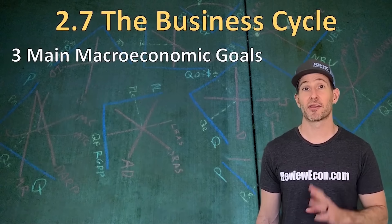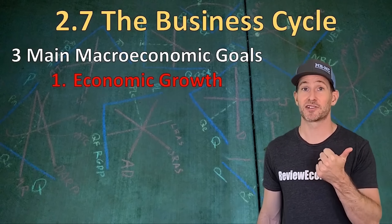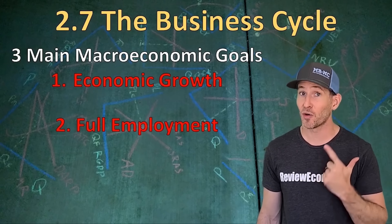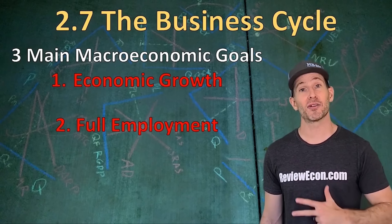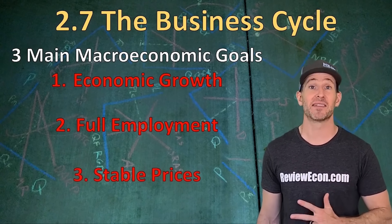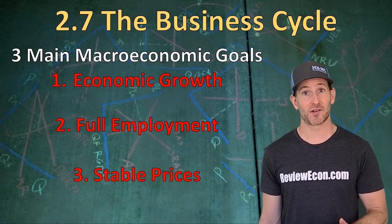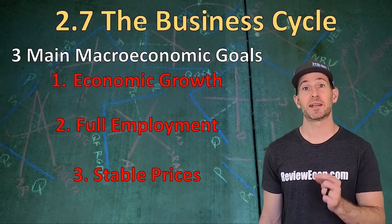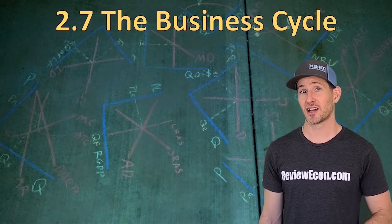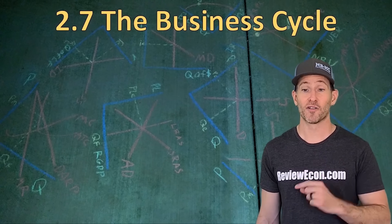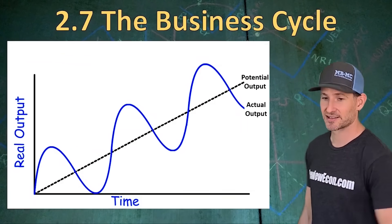This video has been all about the three macroeconomic goals: economic growth, usually measured by GDP; full employment, meaning low unemployment or the natural rate of unemployment where cyclical unemployment is zero; and stable prices, measured by the CPI or the GDP deflator. The reason we have trouble meeting all these goals all the time is because of the business cycle — the natural ups and downs in a market-based economy's economic activity. Over time, real output will increase, then decrease, then increase again, and so on.